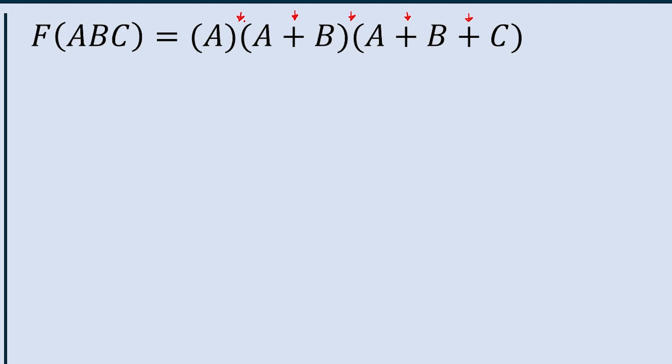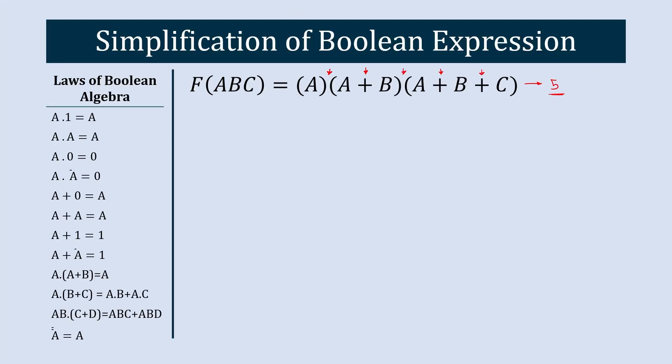So we need a minimum of 5 gates. Now let's simplify this equation, and at the end of the simplification process we will check how many gates we need to implement the same equation.